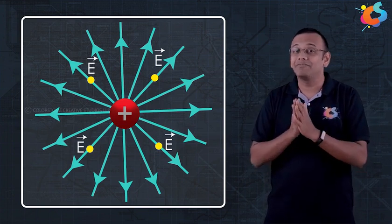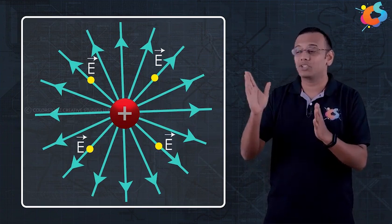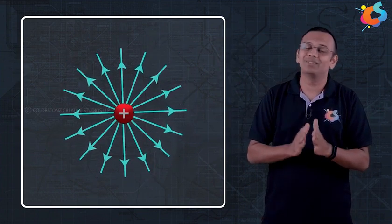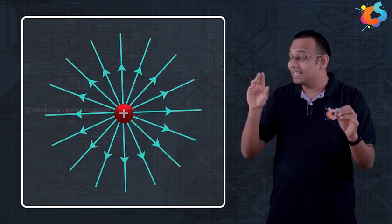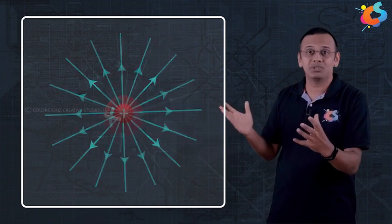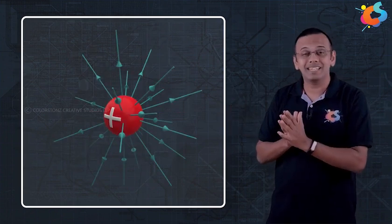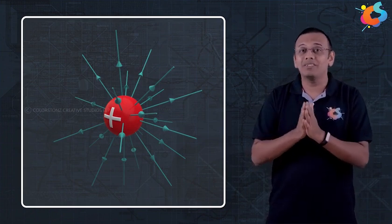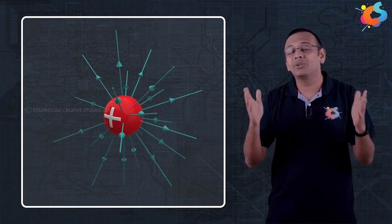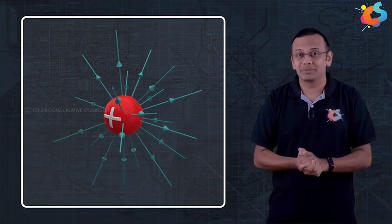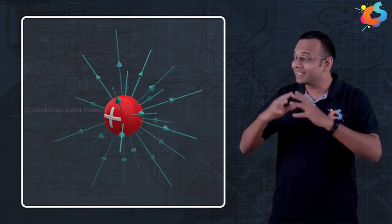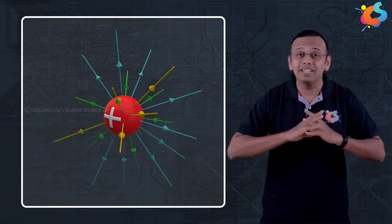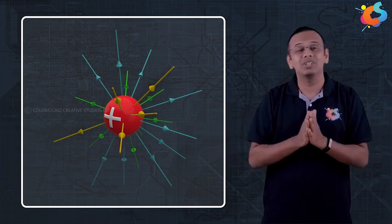The field lines will be straight lines originating from the charge and moving outwards till infinity. Remember, these field lines are actually in three dimensions — they are not just in 2D. Even though when we draw them on paper we can only draw in two dimensions, you must keep in mind they are in three dimensions, coming outwards, going inwards, moving in every direction around this charge.